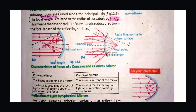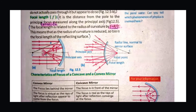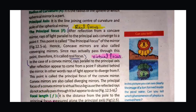Because this focus point of the convex mirror is imaginary — we only get it by extending lines behind the mirror — that is why the convex mirror has a virtual focus. The concave mirror has a real focus, represented by solid lines, while the convex mirror has a virtual focus, represented by dotted lines.